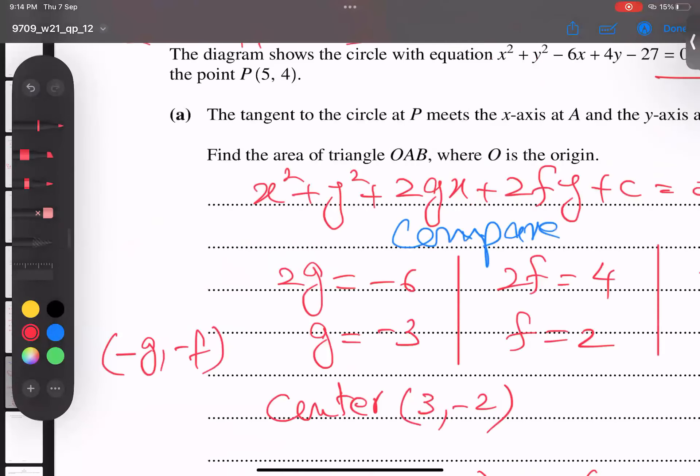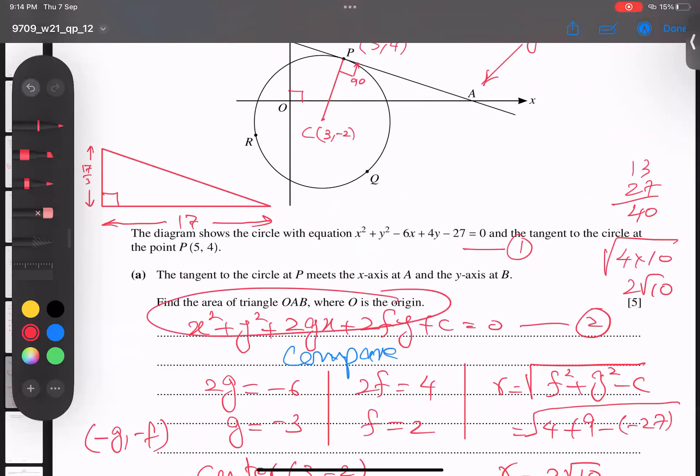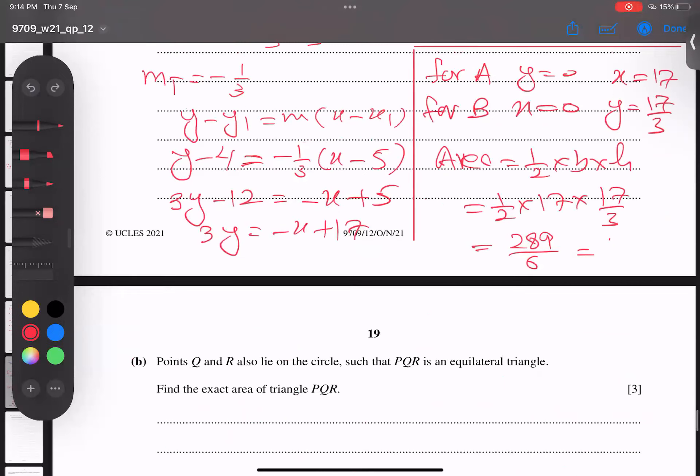Now I'm finding area of triangle. What is the area of triangle formula? Half times base times height. Base is 17 and height is 17/3. Ultimately, if I multiply 17 times 17 and divide it by 6, the answer is 289/6. Or in decimal format, let me check what he's asking. No, he did not mention exact, so we can write in 3 significant figures: 48.166666, so it becomes 48.2. This is my answer. I think the idea is very clear.